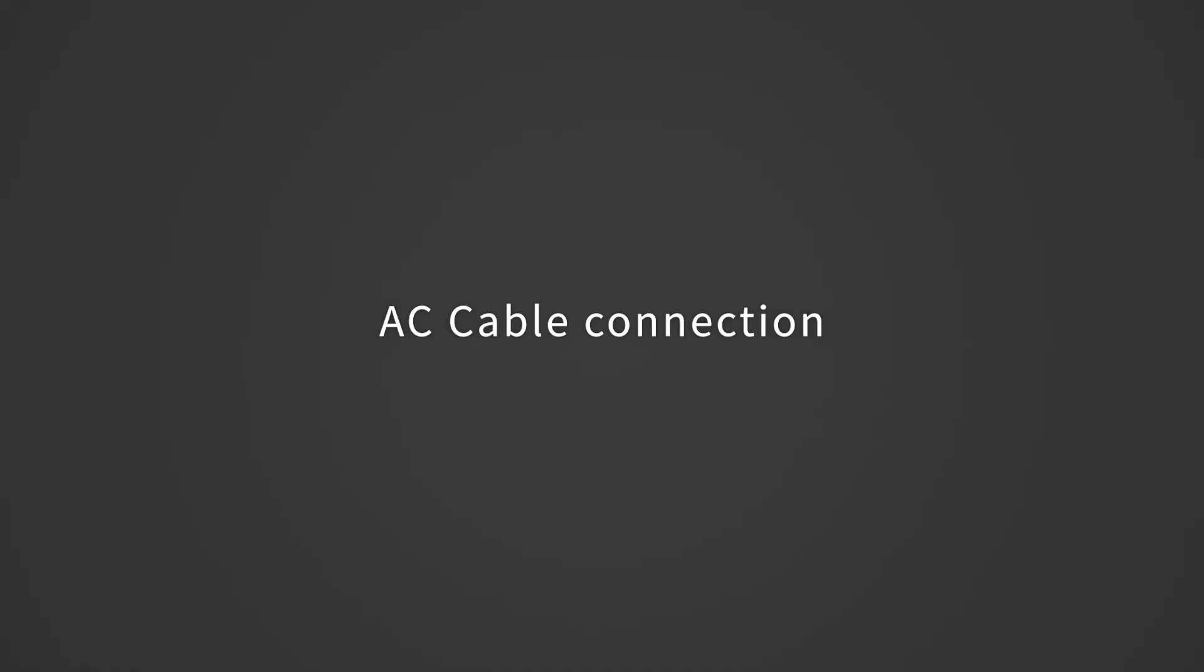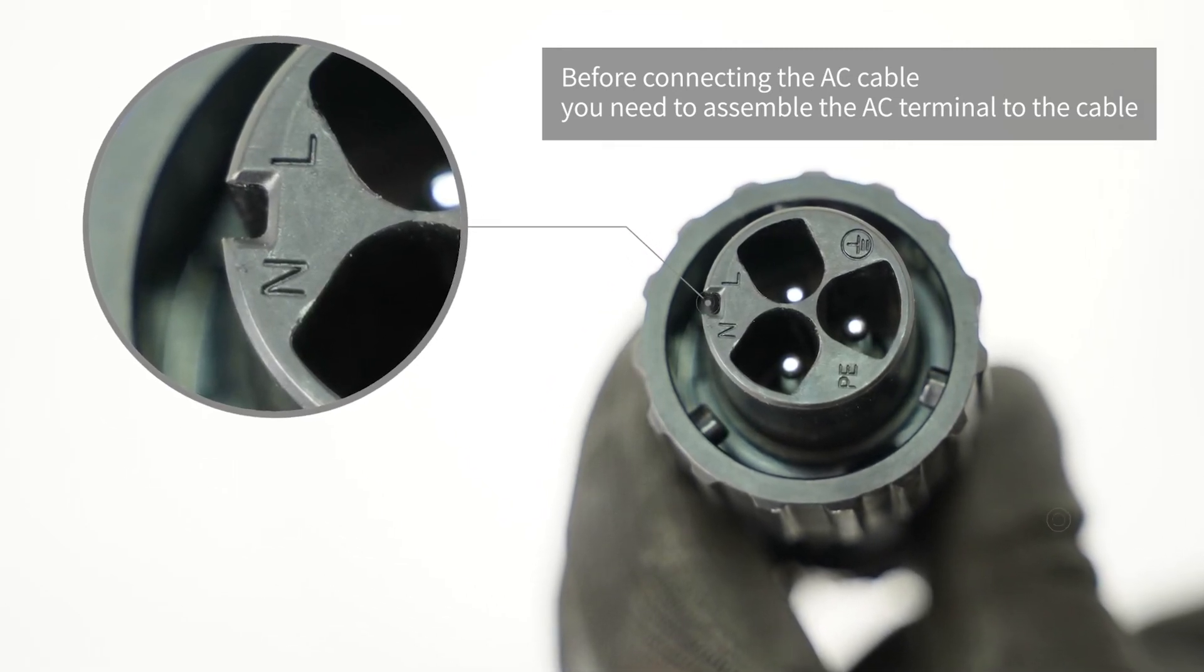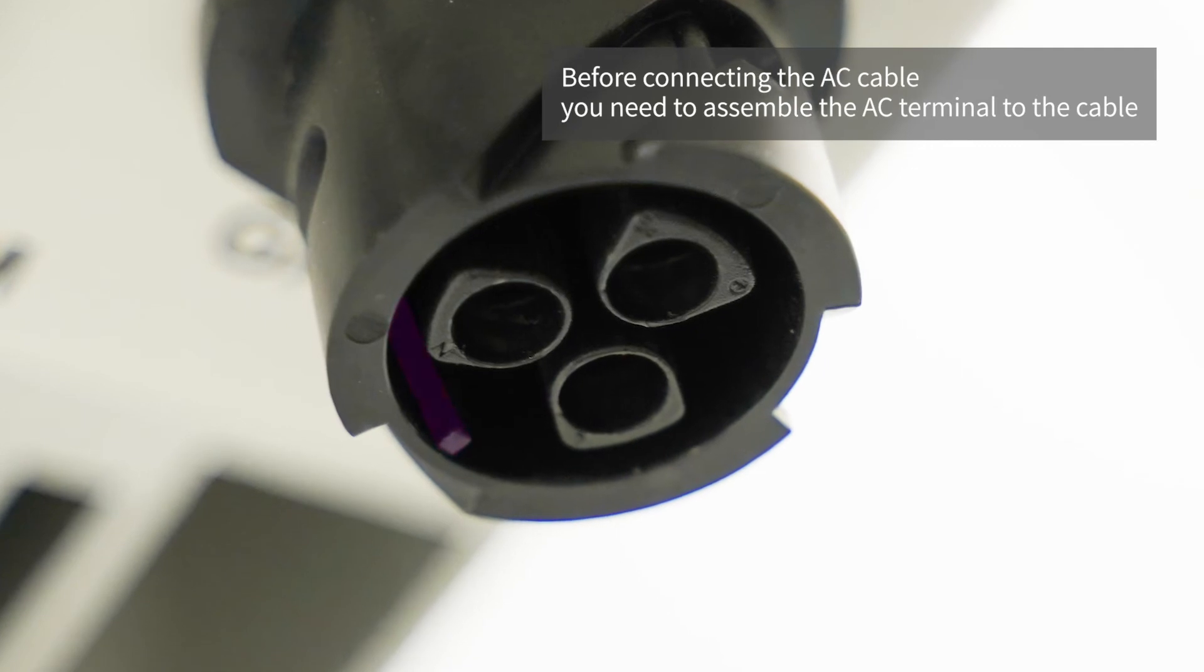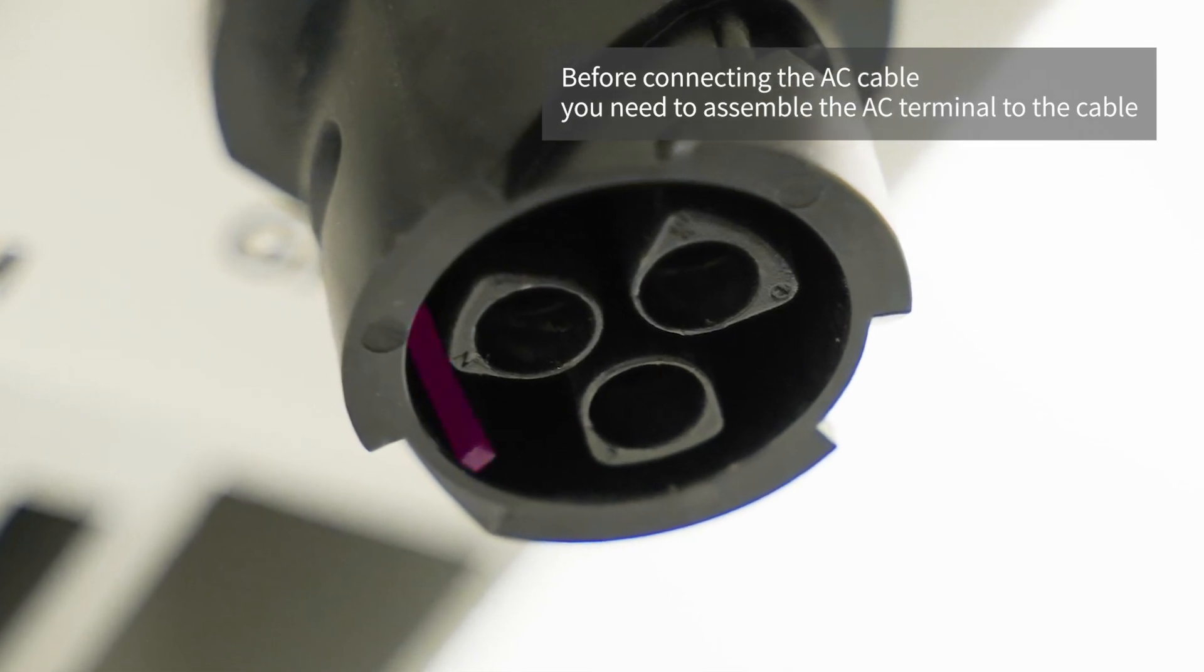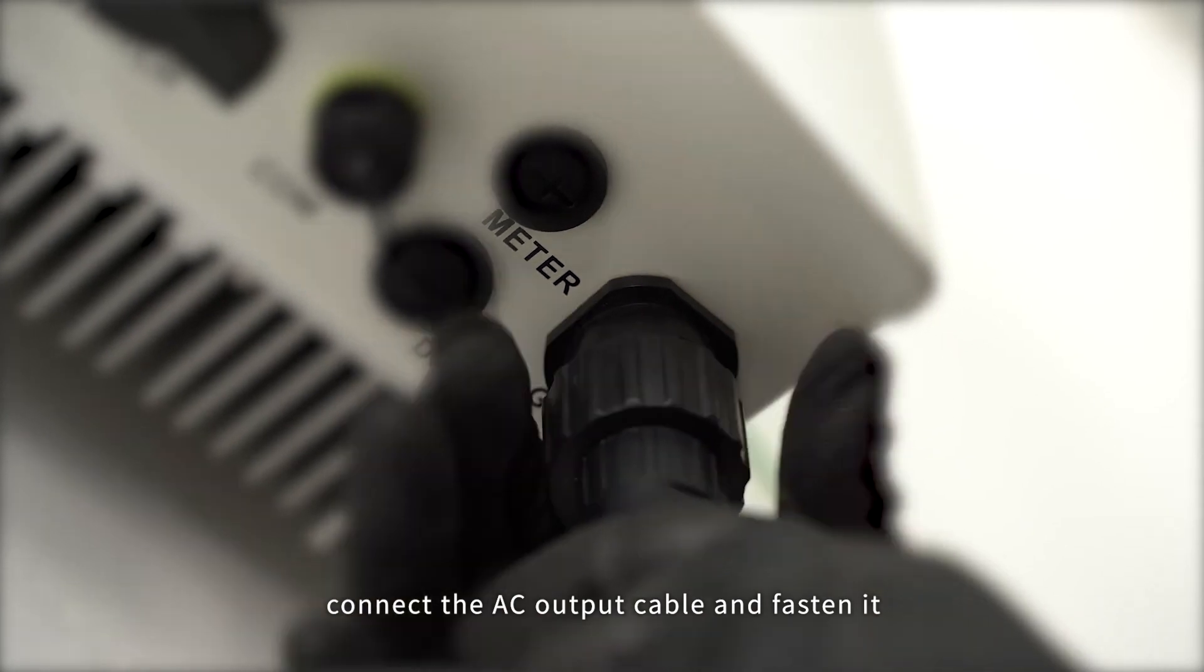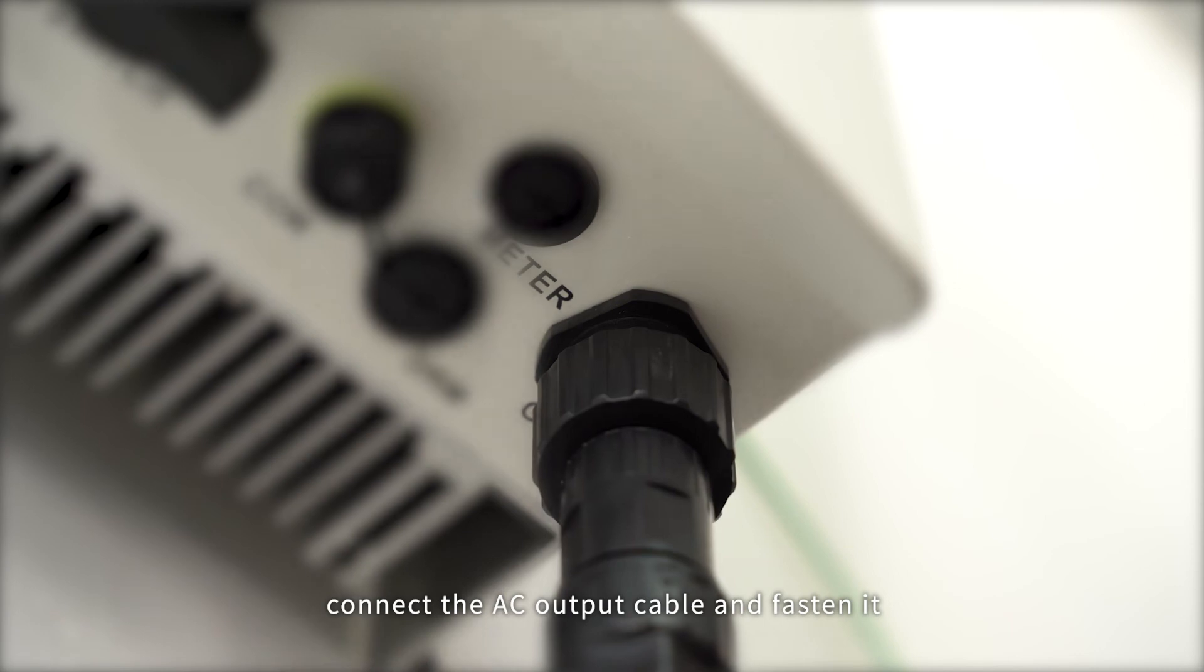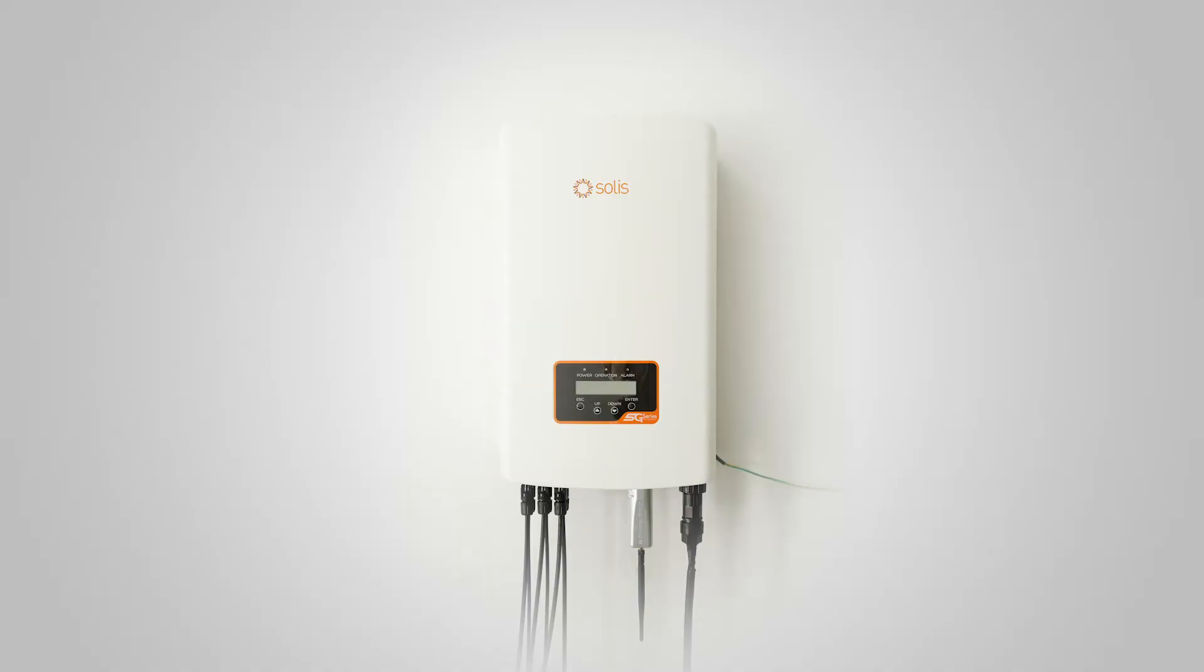AC cable connection. Before connecting the AC cable, you need to assemble the AC terminal to the cable. Connect the AC output cable and fasten it. Cable connection finishes.